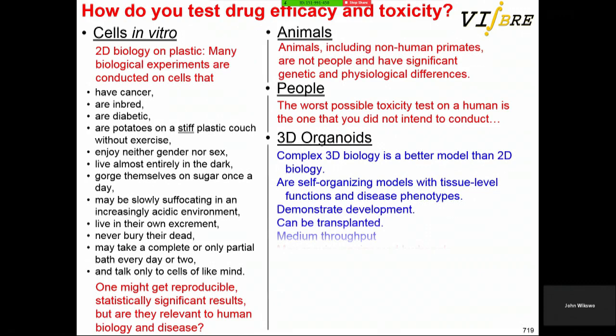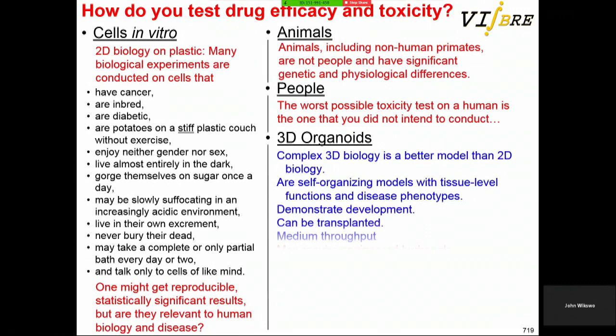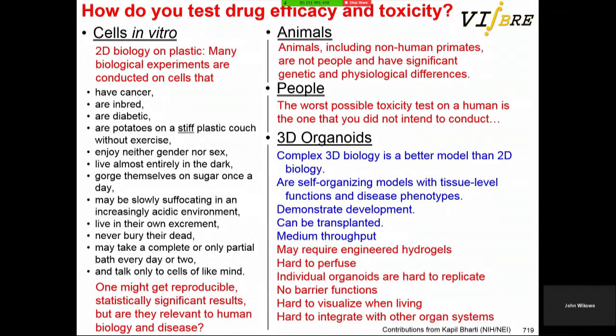Organoids do much better in complex biology than 2D biology and are self-organizing. One limitation is that you can't do barrier studies easily, and it's hard to replicate because each organoid might come out looking different from another.